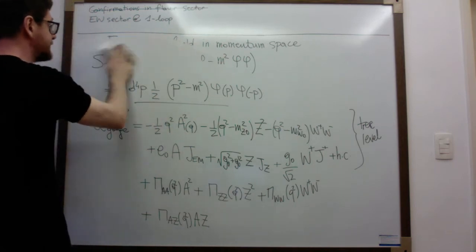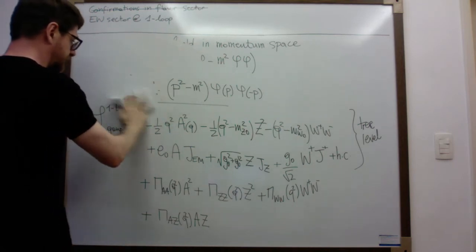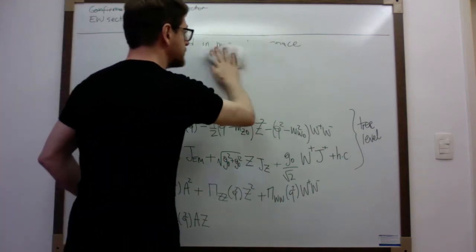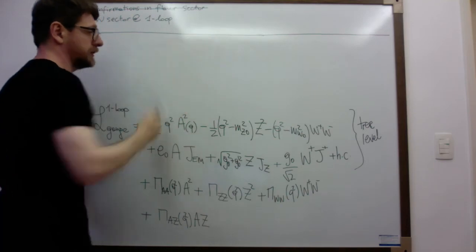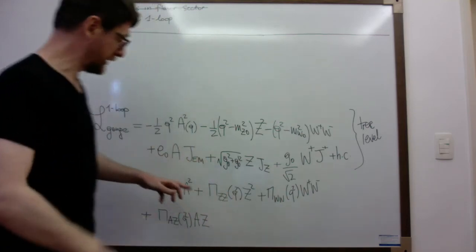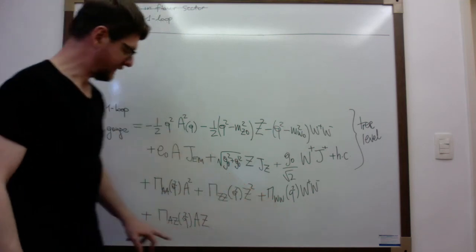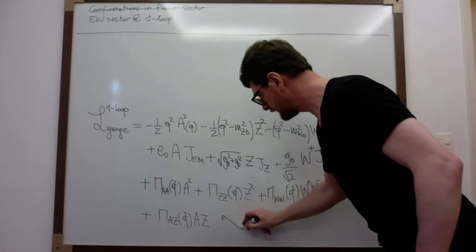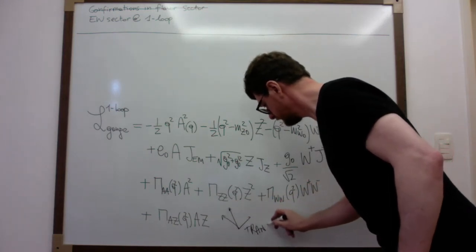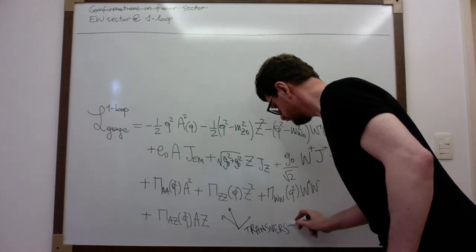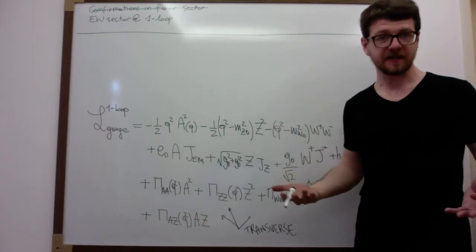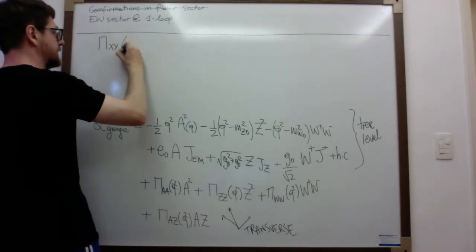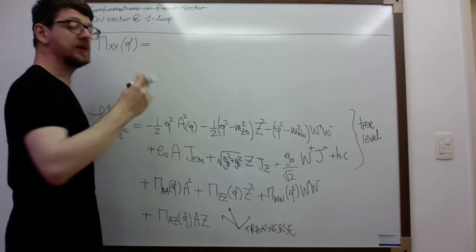Now let's write in explicit form for these Pi's. As I told you before, we can safely ignore the longitudinal part of the Pi's — so all these Pi_{AA}, Pi_{ZZ}, Pi_{WW}, Pi_{AZ} are already the transverse ones. Let me write the generic expression for Pi_{XY}(Q-squared): I will always write it as Pi_{XY}(0) plus Q-squared times Pi-prime_{XY}(Q-squared). This is a bit of an unfortunate notation because it gives you the impression that this object is the derivative of Pi, but that is not so. This is just the value of Pi and the derivative of Pi evaluated at Q-squared equals zero. You can imagine this as an expansion in Q-squared.